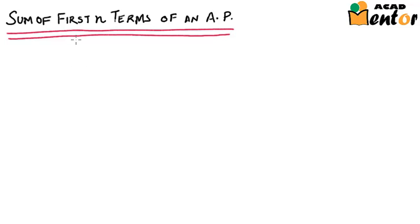Hi friends, in this video we will talk about the sum of first n terms of an AP. Say we are supposed to find the sum of first 100 natural numbers, that is 1 plus 2 plus 3 up to 100. How do we go about that?